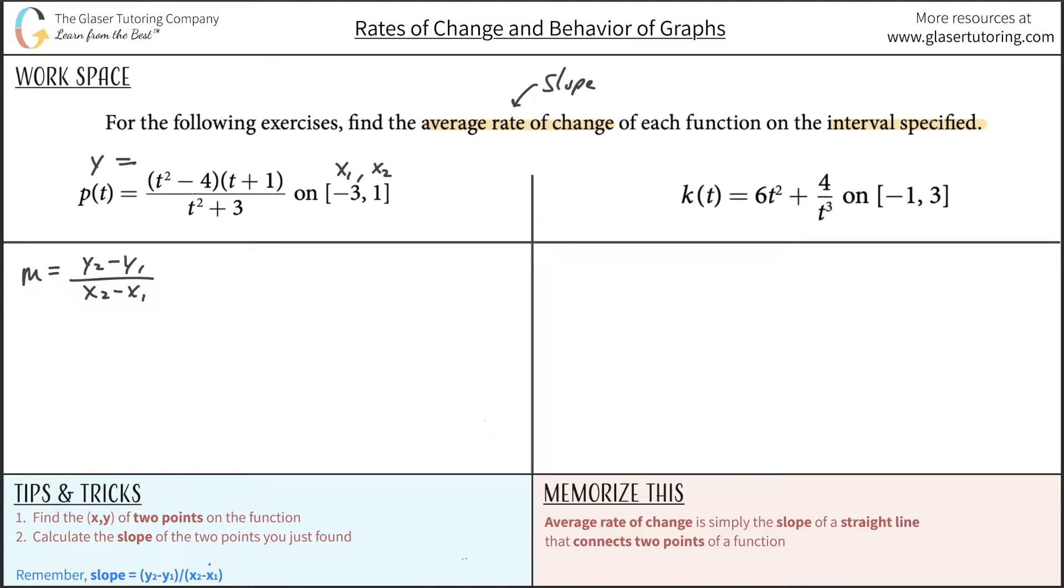Remember, just reinterpret p of t as y, whether it's f of x, p of t, g of x, g of y, whatever. Whatever letter of whatever letter, just reinterpret that as y. What that means is that you have an equation here that says y will be equal to blah, blah, blah, blah, blah. And now another thing is here, I'm calling these x1, x2, and I realize this is t in here. It doesn't matter.